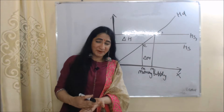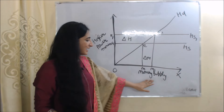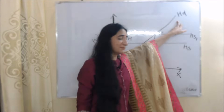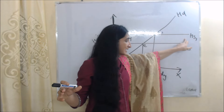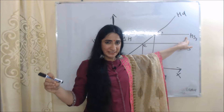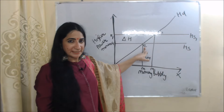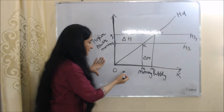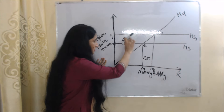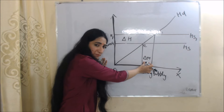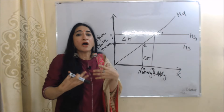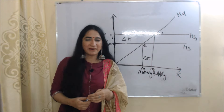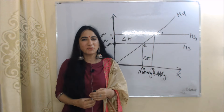Now we will see one more diagram to understand high powered money, money supply, and money multiplier. In this diagram, the x-axis has money supply and the y-axis has high powered money. The HD line represents demand for high powered money. HS and HS-one lines represent supply of high powered money. Initially we have equilibrium at point E. As supply of high powered money increases from OH to OH-one, money supply increases from OM to OM-one. This change in supply of high powered money causes the change in money supply, and how much money supply increases because of high powered money is the money multiplier. This is all about the determinants of money supply, high powered money, and money multiplier. Thank you so much for watching this video.